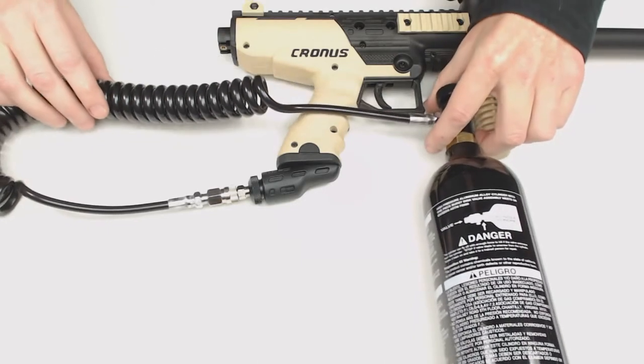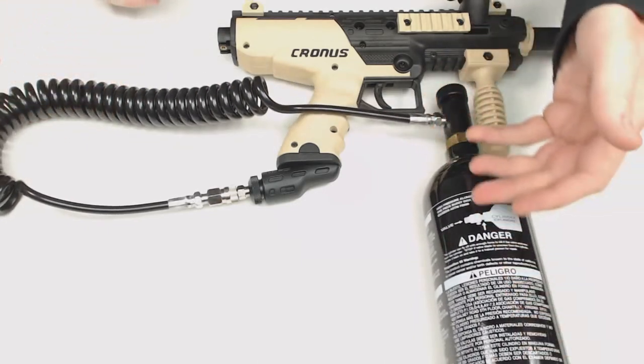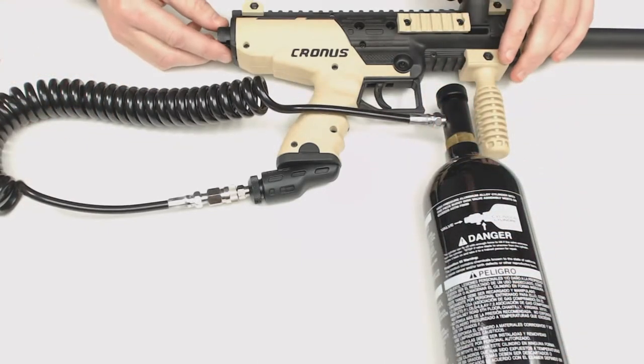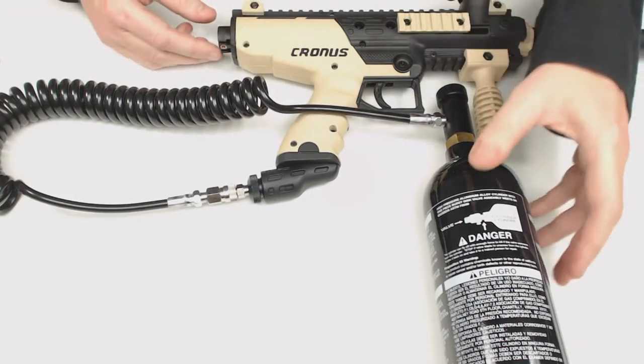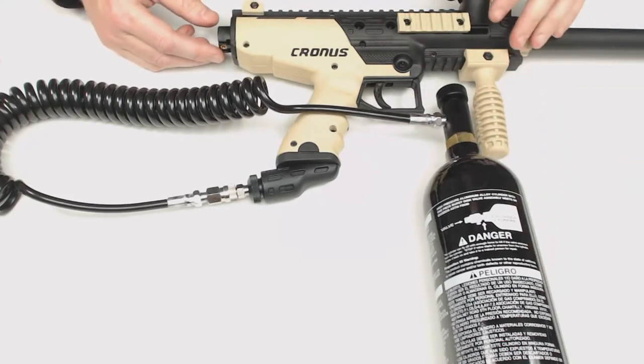First, what is a remote line? A remote line is a line that allows you to separate your bottle, either a compressed air bottle or a CO2 bottle like this, from your paintball gun so that you can carry your bottle on your back, usually in a harness or a vest of some type that has a special pouch in it.